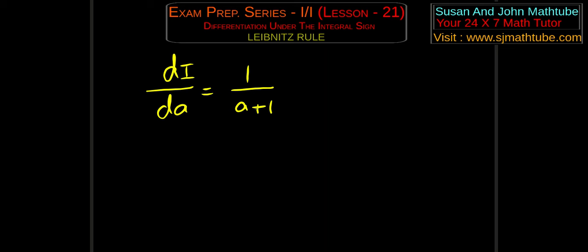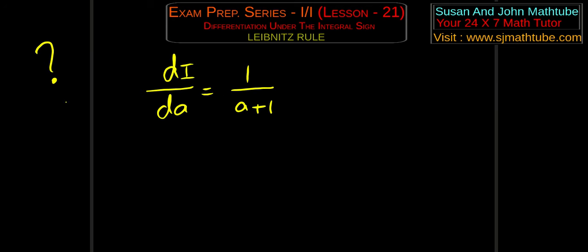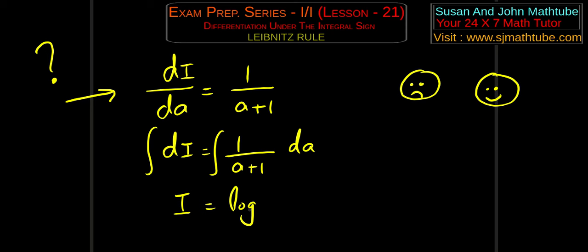So dI/da equals 1/(a+1). What are we trying to find? We are trying to find I. But we found dI/da. Using variable separable: dI = 1/(a+1) da, integrate to get I = log(a+1) + C. Call this equation 1. But don't be too happy — the given integral is a definite integral, and a definite integral will never have an arbitrary constant, so we still have to find C.